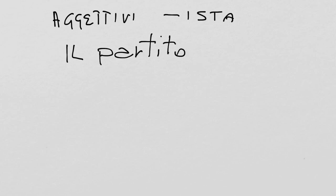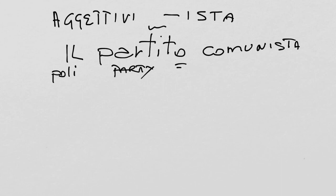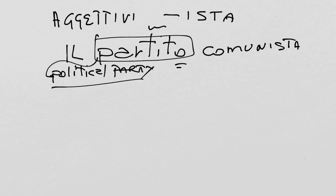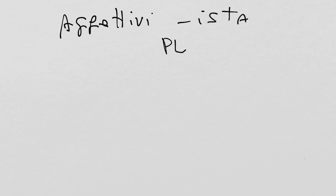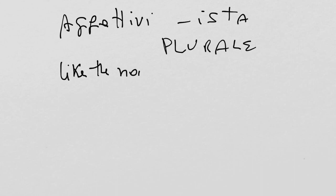-Ista is also the ending for some adjectives, and we're going to see a few cases. For instance, il partito comunista — partito means political party. For the feminine, let's use l'idea comunista, the communist idea. Note that la in front of a vowel becomes l' with an apostrophe, so we read it l'idea comunista. Now let's look at the plural form of the adjective in -ista — they behave like the nouns.